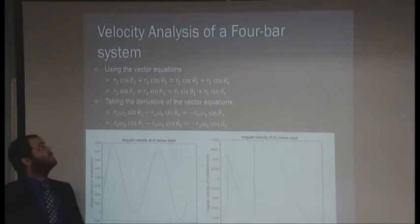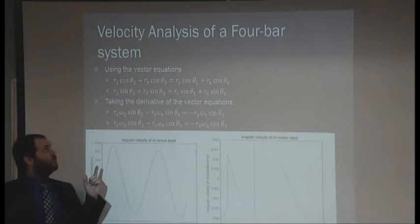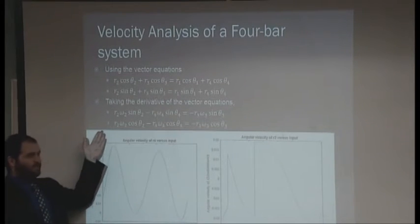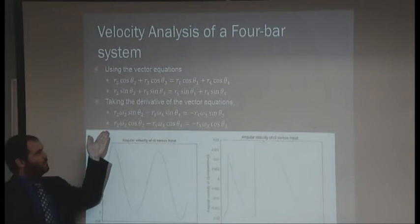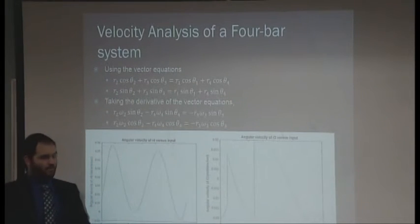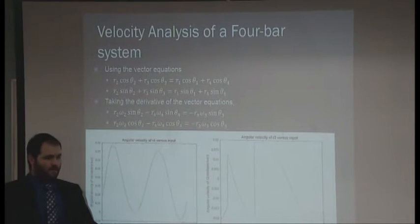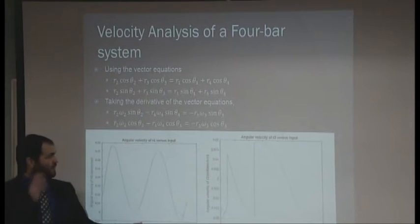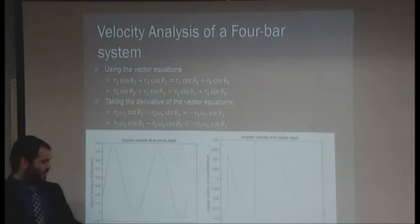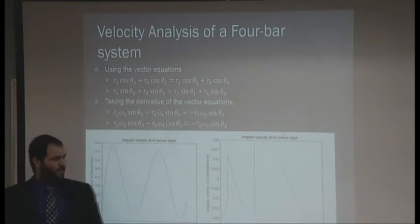Next, you will see the velocity analysis of the four-bar mechanism. You take the vector equations, what you see here, and then you take the derivative of them, and you get these equations here, which are the velocity equations. Then you take these equations, put them in matrix format, solve for them for the output velocity equations. Here you can see the angular velocity of the link R4 versus the angle R3, and also over there is the R2 version.